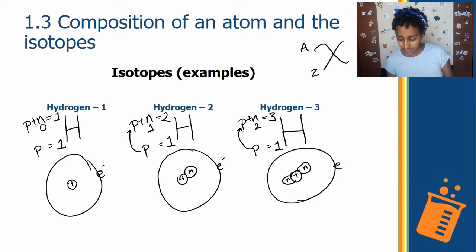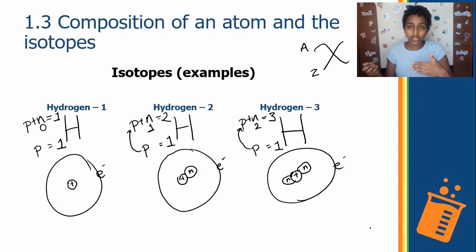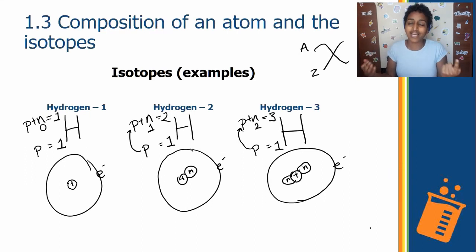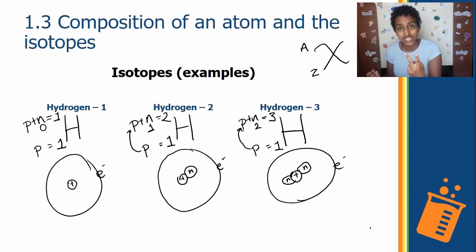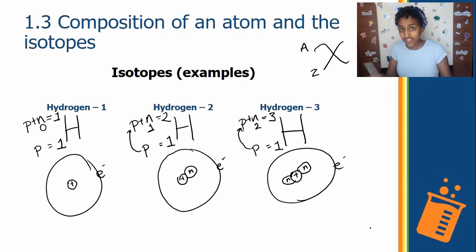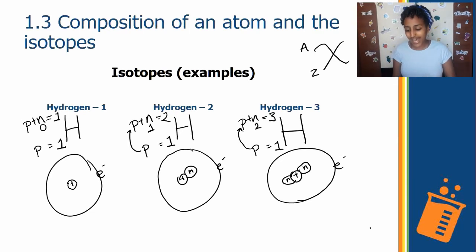Another way to think about this: the mass number is just the number of particles in the nucleus. Hydrogen-1 has one thing in the nucleus — a proton. Hydrogen-2 has two things — one proton and one neutron. Hydrogen-3 has three things — one proton and two neutrons. That is what isotopes are: everything is the same except the neutron number, which causes different mass numbers.